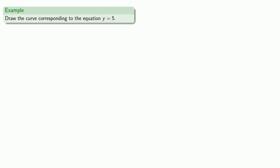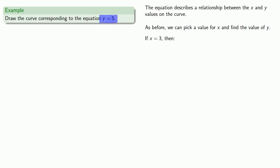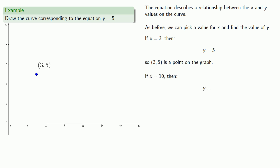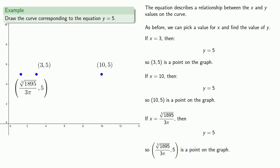So, for example, let's draw the curve corresponding to the equation y equals 5. Again, the equation describes a relationship between the x and y values on the curve. As before, we can pick a value for x and find the value for y. So I'll pick x equals 3 because I like the number 3. Then our formula tells us that y equals 5, so 3, 5 is a point on the graph. I'll pick another value for x. If x equals 10, then our formula tells us that y equals 5, so 10, 5 is a point on the graph. And if y equals this horrible mess, then our formula tells us that y equals 5, and so I have a point on the graph. After plotting these points, I can connect the dots and carefully label what I've done, which gives me the graph of the equation y equals 5.